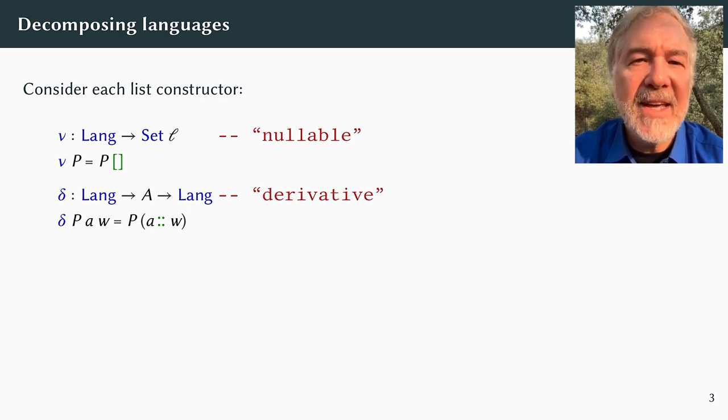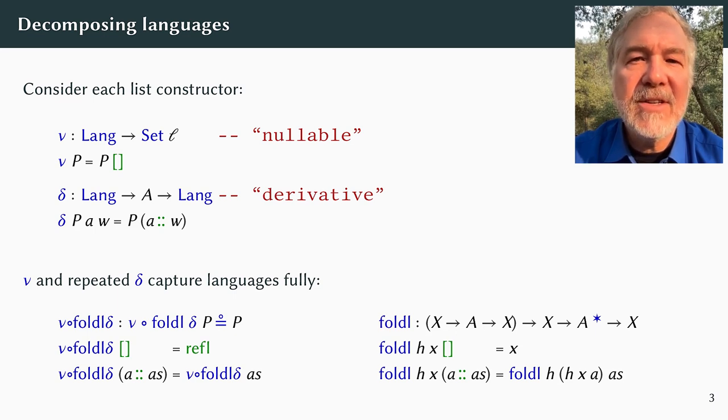The proofs that W is in the derivative of P with respect to A are exactly the proofs that A cons W is in P. The importance of these definitions comes from a simple fact with a simple inductive proof. Given a language P and a string, we can successively differentiate P with respect to the characters in the string, resulting in a final residual language. The original language P contains the input string if and only if the residual language is nullable.